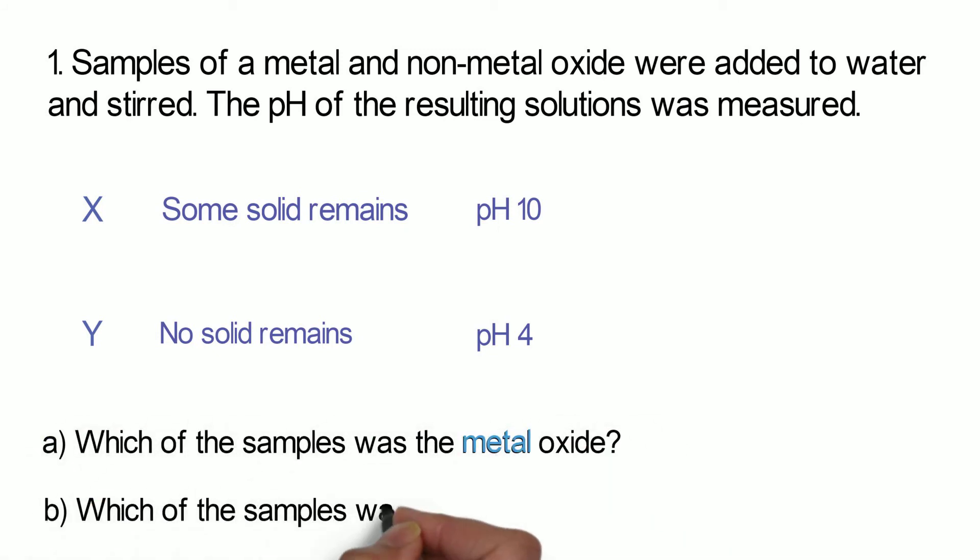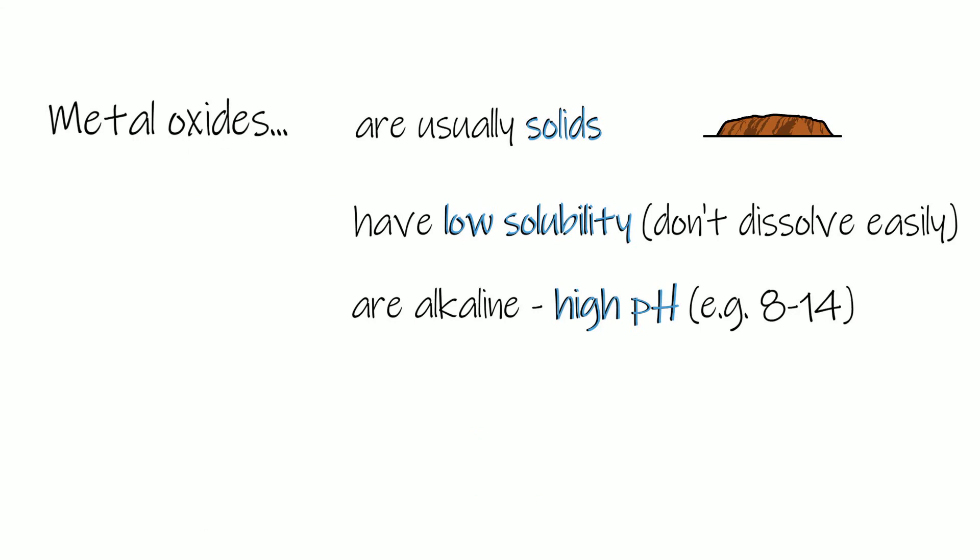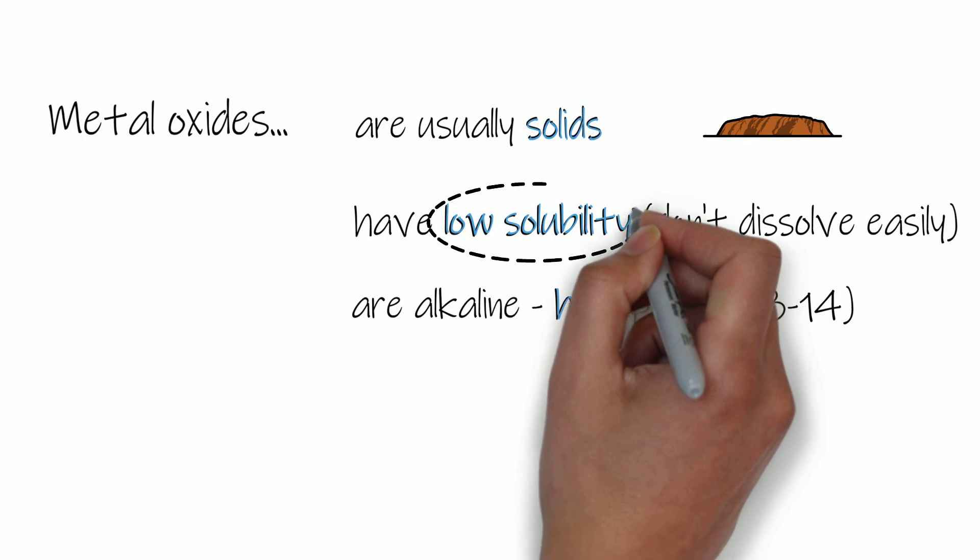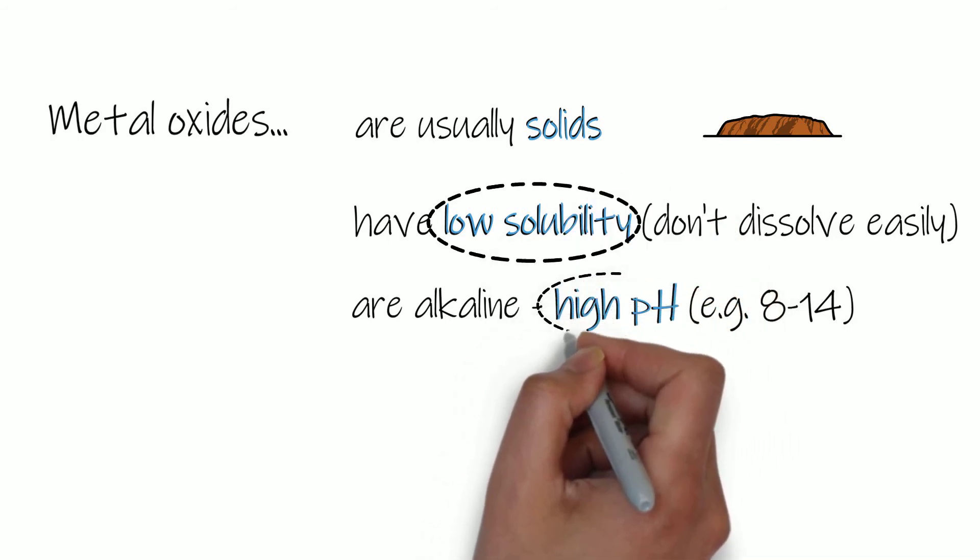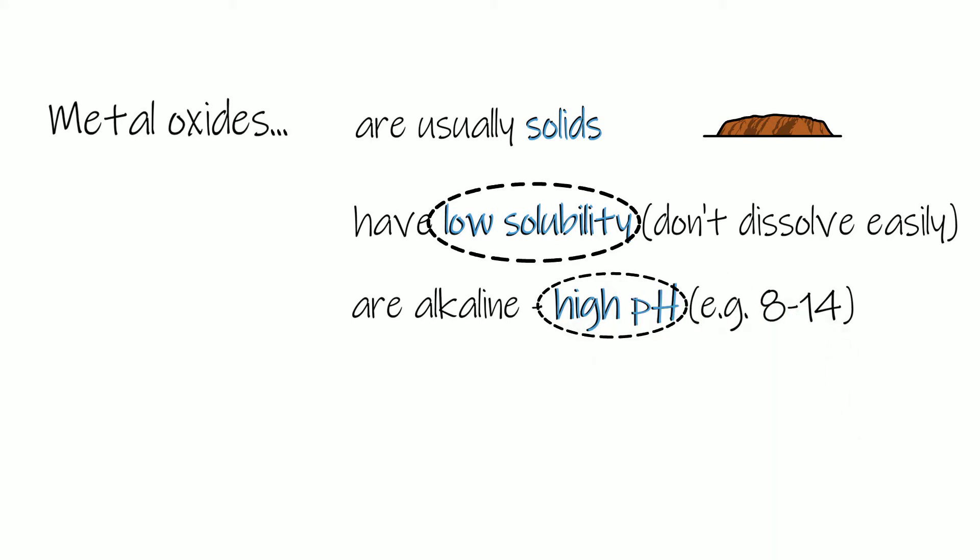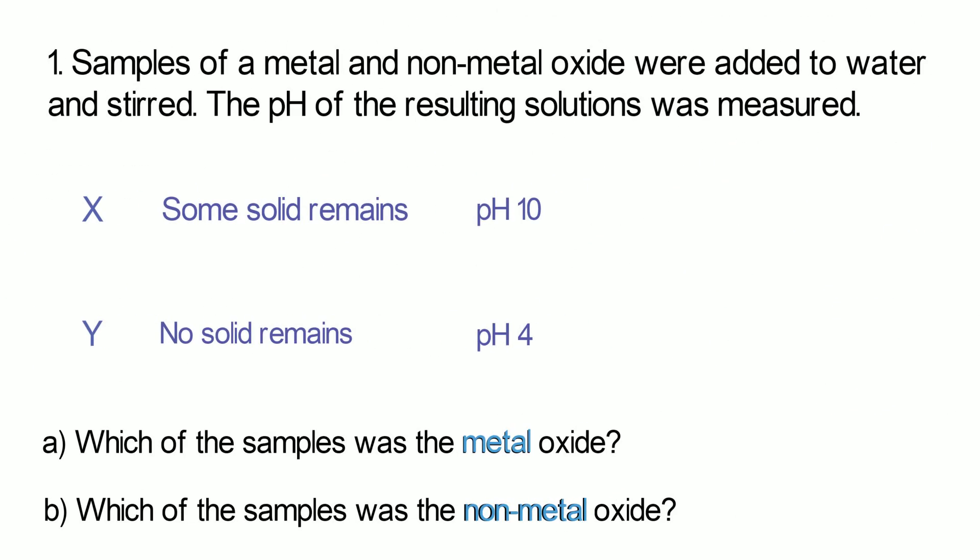We need to decide which one is the metal oxide and which one is the non-metal oxide. Well to do that we're going to have to go back to the properties of the metal oxides and decide which one fits those properties best. So we can see that metal oxides have a low solubility which means they don't dissolve very well, so some of the solid is going to be left, and also they form solutions with a high pH above 7.